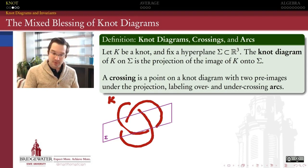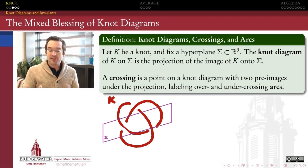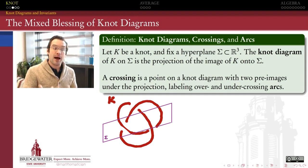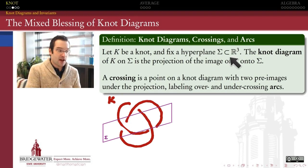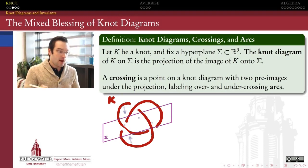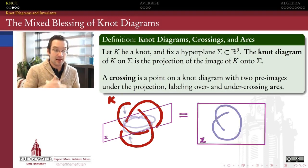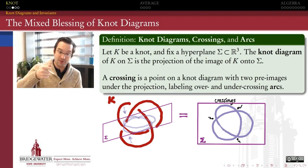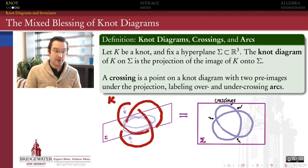What we saw on the last slide were not really knots, but knot diagrams. Because you're watching this on a two-dimensional screen, the best we can do is look at a two-dimensional projection of the knot from three-space — and that projection is what we call a knot diagram. To get a knot diagram, we take the image of a knot K, fix a hyperplane sigma, and take the orthogonal projection of all points on that knot down onto that plane — like shining a flashlight on the knot down onto a flat surface.